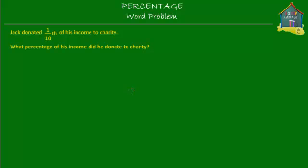Welcome to homecampus.com.sg. Let's solve a word problem. The problem given is: Jack donated one tenth of his income to charity. What percentage of his income did he donate to charity? What we're given is Jack donated one tenth of his income to charity. We don't know how much income he made, but we know he gave one tenth of his income to charity. So let's make a block that represents his income.